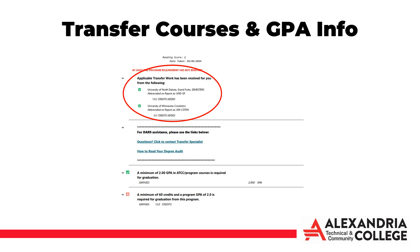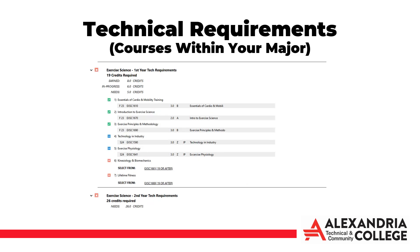Additionally, you must earn a 2.0 cumulative GPA to graduate from ATCC. Your ATCC GPA will update on your degree audit as you complete courses. Typically, technical program audits are broken up into multiple requirement sections, two of which are technical program requirements and liberal arts or gen ed requirements. Technical requirements are courses from within your major that are required for graduation from your program and are specific to the program in which you are enrolled. The number of credits required for each section will be listed, as well as the number of credits earned, in progress, and still needed.